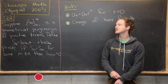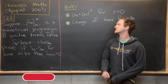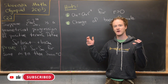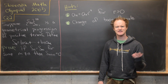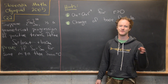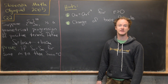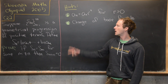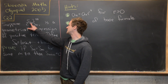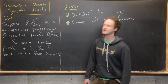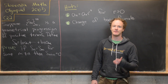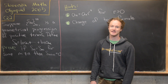Here we're going to look at a problem from the 2005 Slovenia Math Olympiad. This is question 2 from the grade 4 exam — the highest grade exam, which probably corresponds to the finishing year of high school or secondary school. We want to suppose that we've got a sequence of numbers a_n as n goes from 1 to infinity, and it is a geometric progression of positive terms.